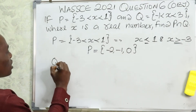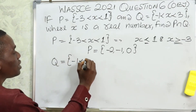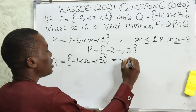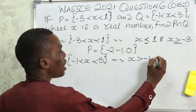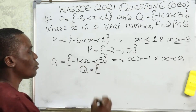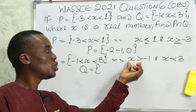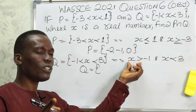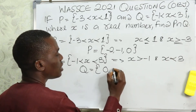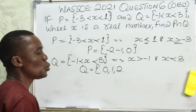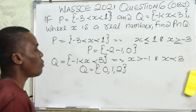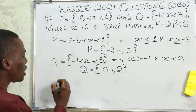The next one: we are told that Q is within the range of minus one less than x less than three. The values for this inequality are x greater than minus one and x less than three. So to get the values of Q — minus one is not included, so we have zero, one, and two. Three is not included. So the range of values for Q is: zero, one, and two.